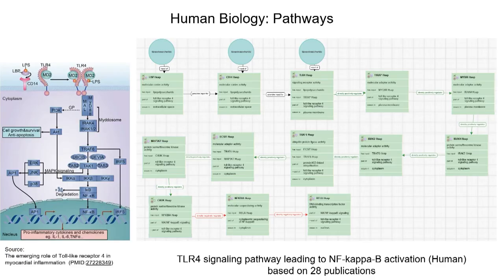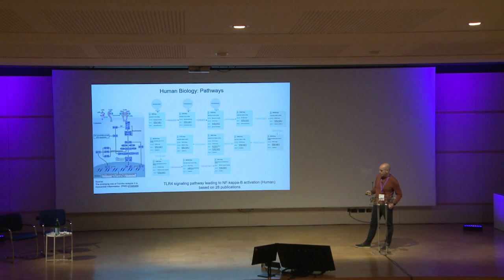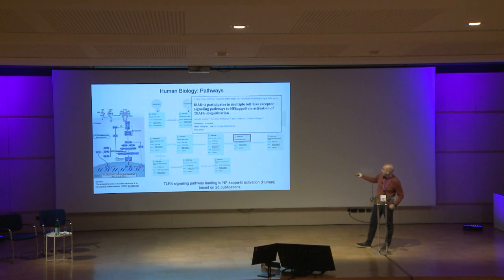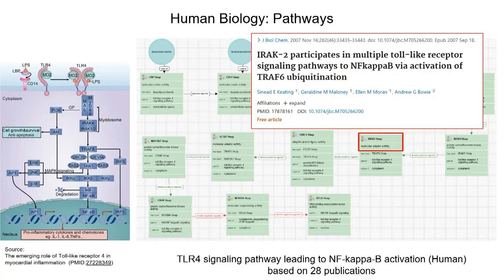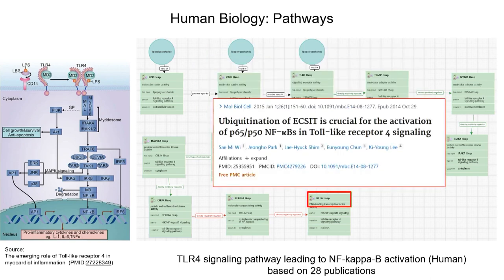Here is an example of a pathway: the well-known TLR4 signaling pathway. It starts with the recognition of LPS outside the cell by LBP and CD14, which transfer the LPS onto TLR4. This initiates the signaling cascade at the plasma membrane all the way down to activation of NF-κB and cytokine production. What you see around here is the LPS, because we use ChEBI to describe it. This model is based on 28 publications, and for each single step you have corresponding publications — for instance, the role of IRAK2, TRAF6, or NF-κB in this pathway. Each single step has a reference linked to it.